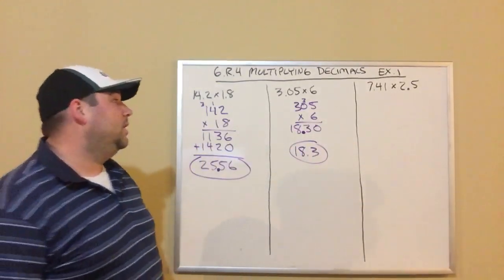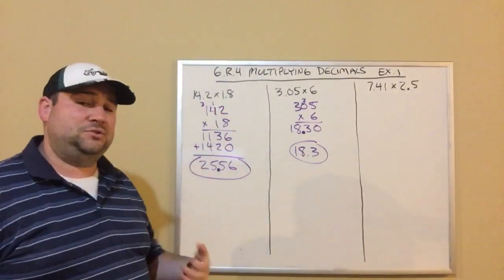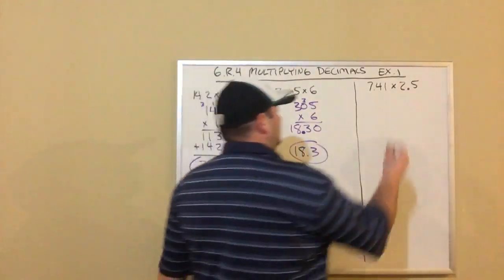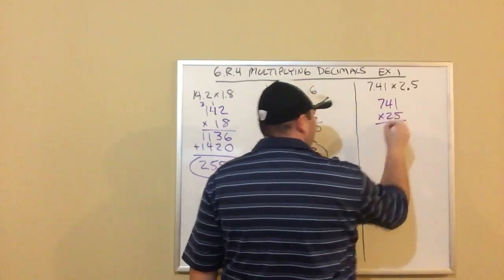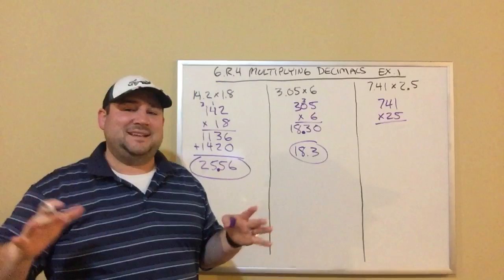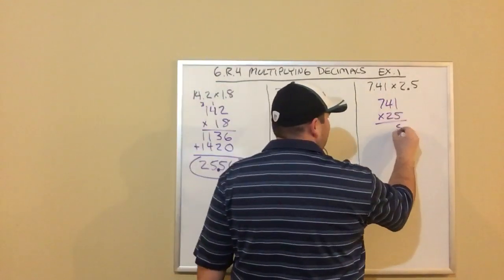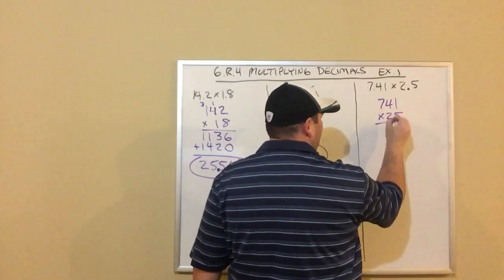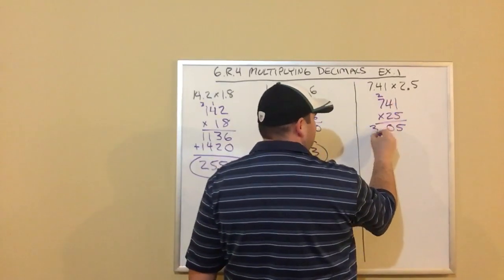Our last one, we got 7.41 times 2.5. So I'm going to write this out as 741 times 25. Again, normal multiplication as if there are no decimal points. 5 times 1 is 5, 5 times 4 is 20, carrying my 2. 5 times 7 is 35, plus 2 is 37.